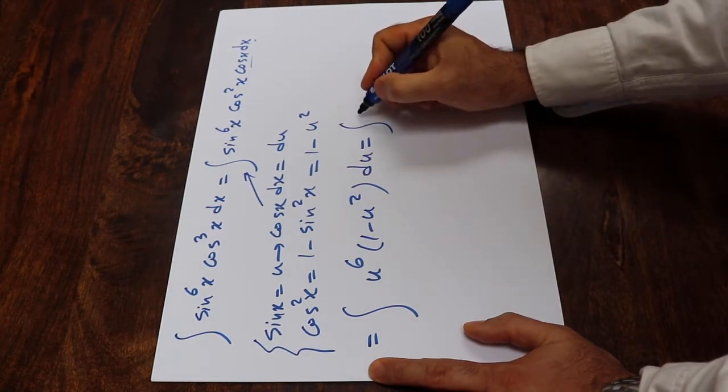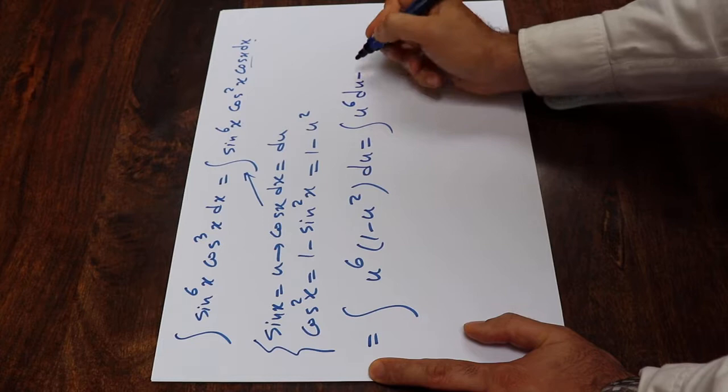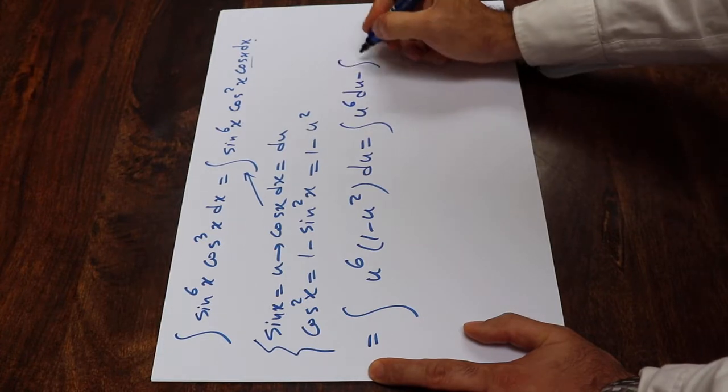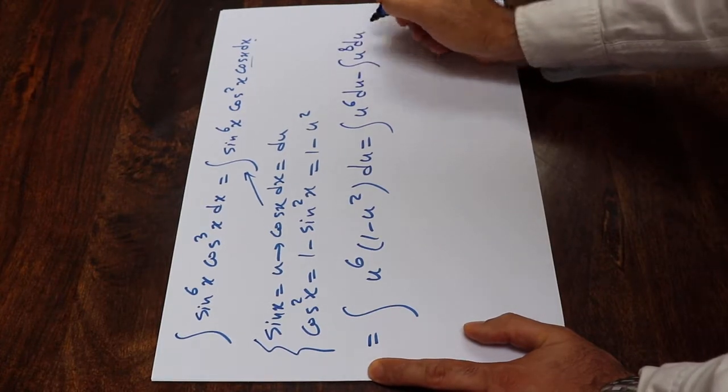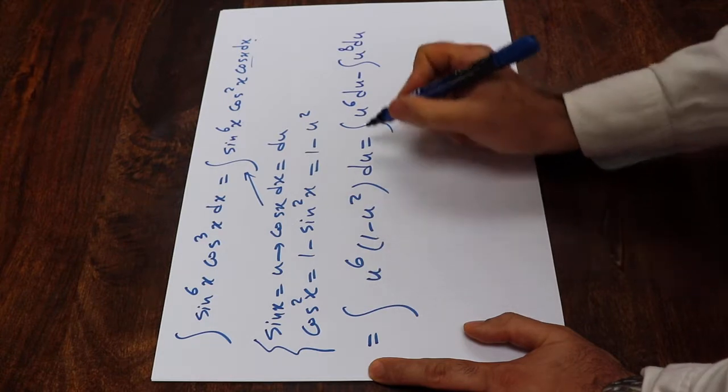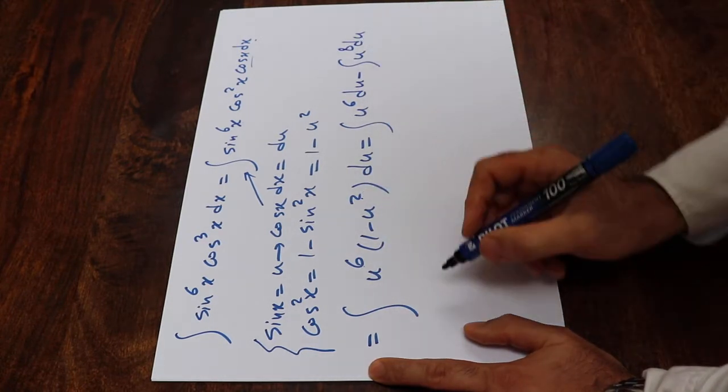So that will be equal to integral of u to the power of 6 du minus integral of u to the power of 8 du, because u to the 6 times 1 is u to the 6, and u to the 6 times u squared is u to the 8.